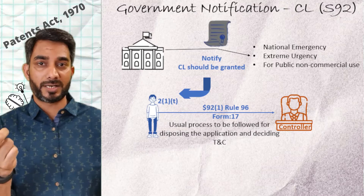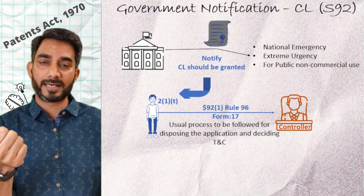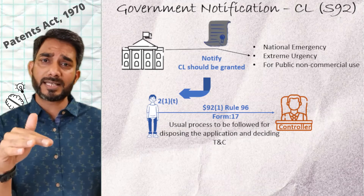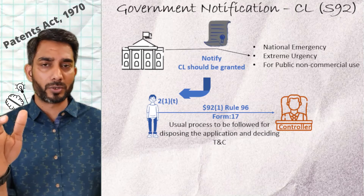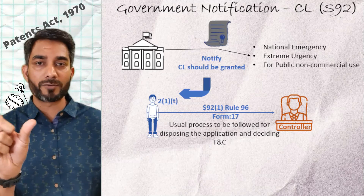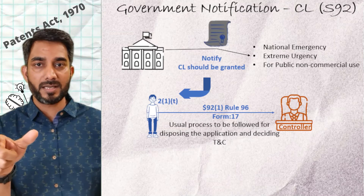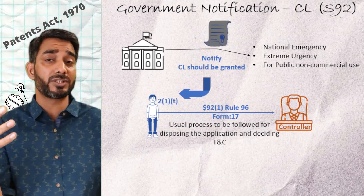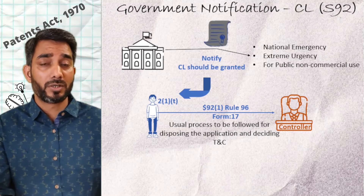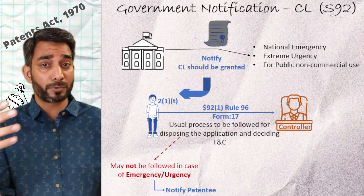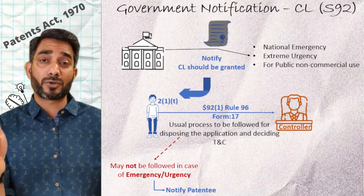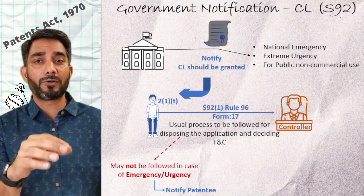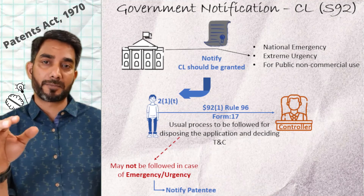Under Section 92.1, Rule 96, Form 17, the usual process would be followed — section 87 to and fro between the patentee and the applicant. However, during national emergency and extreme urgency, such process may not be followed completely. When the process is not being fully followed, the controller is required to notify the patentee at the earliest that the CL will be granted without following the entire process.